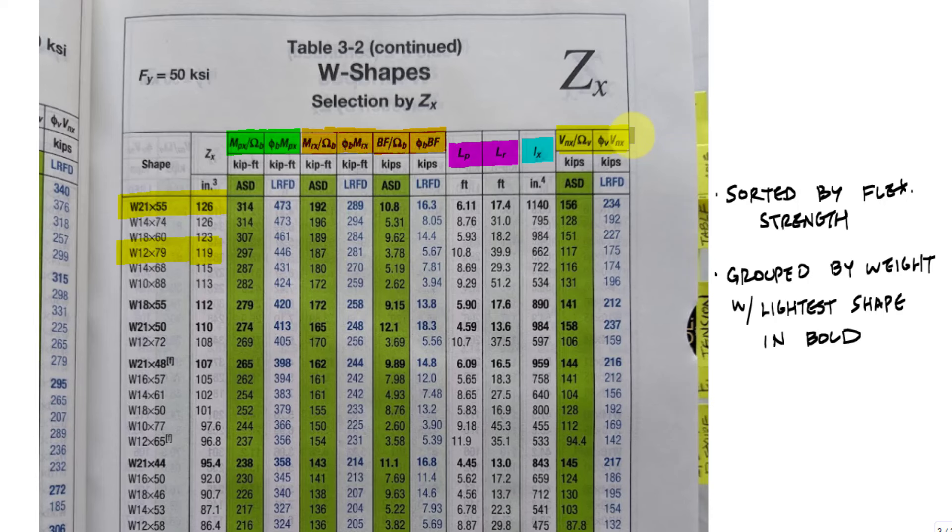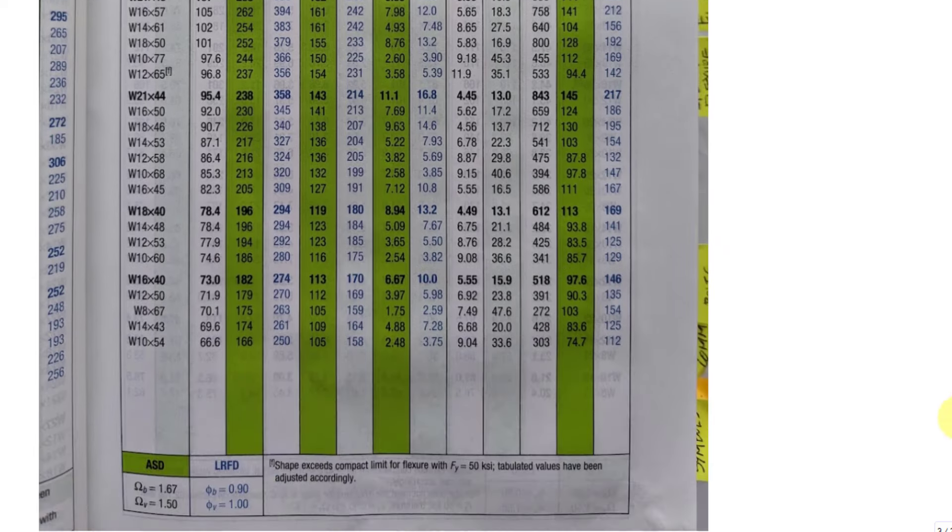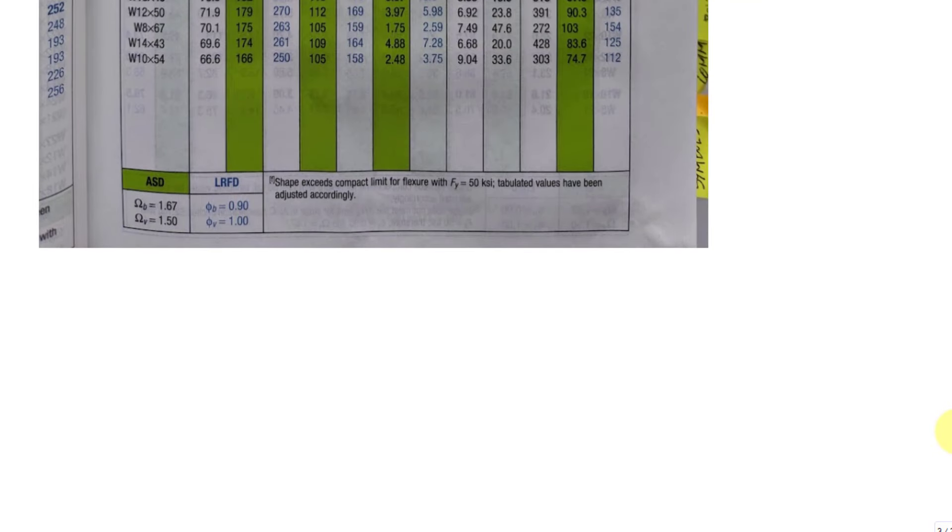I also get the moment of inertia for easy deflection checks and the shear strength of the section as well. Lots of information here. Amazing. Helps expedite so much, especially if you're doing calculations and checks by hand. So let's do an example using this table. And down here, check it. Resistance factors and safety factors if you need it.